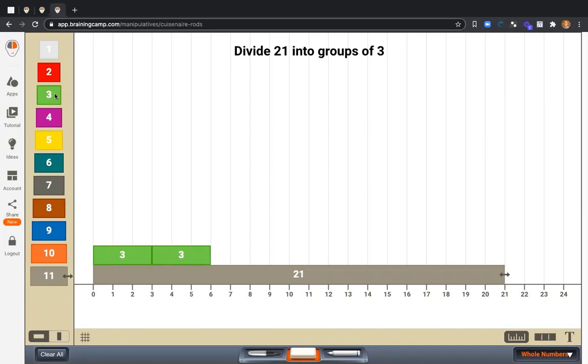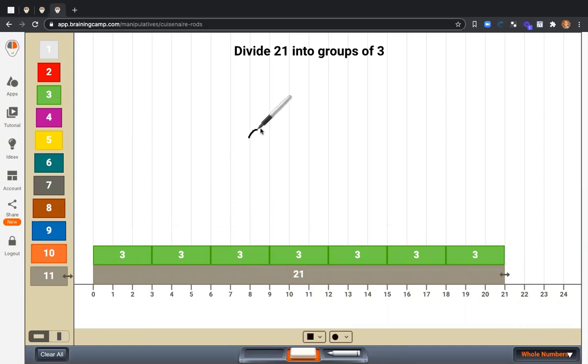There's 1, 2, 3, 4, 5, 6, 7. 21 divided by 3 equals 7.